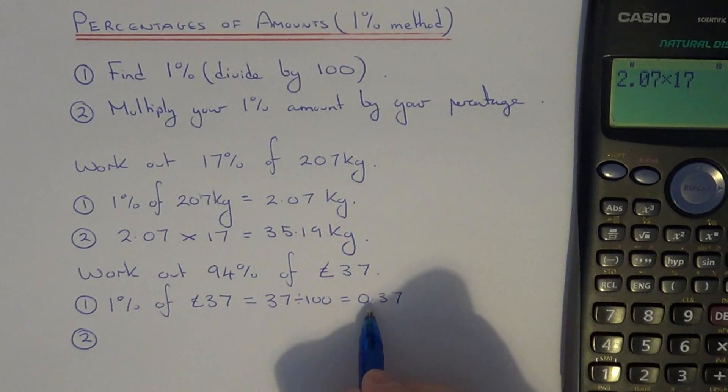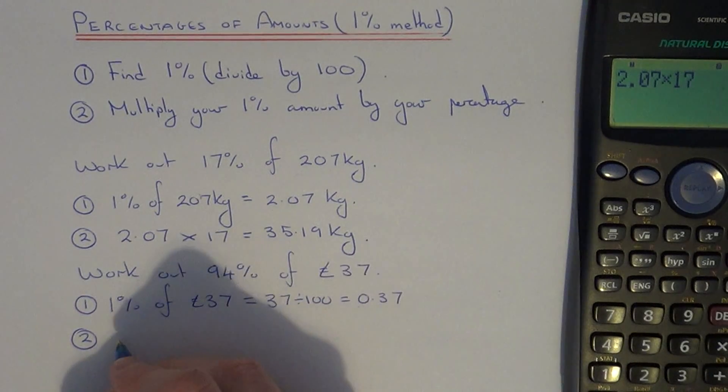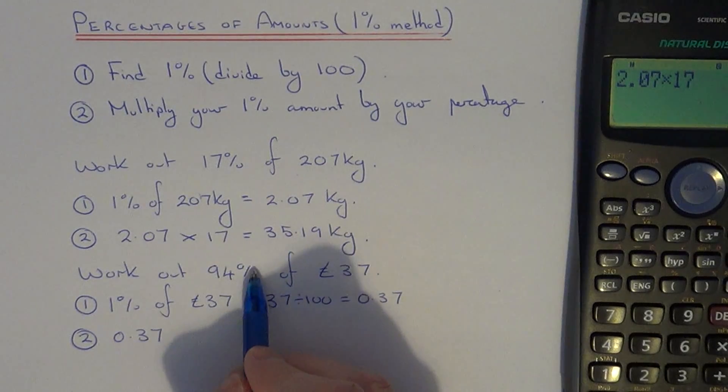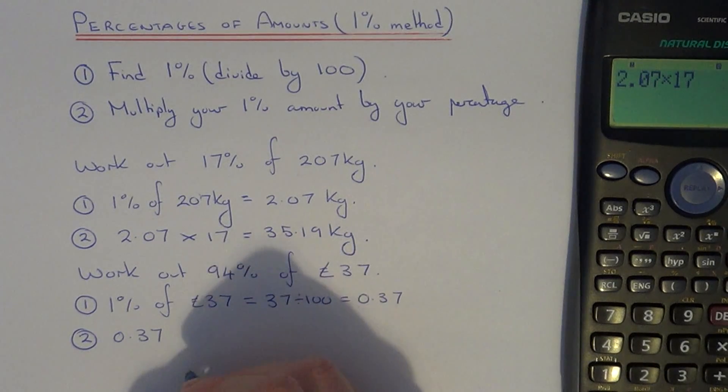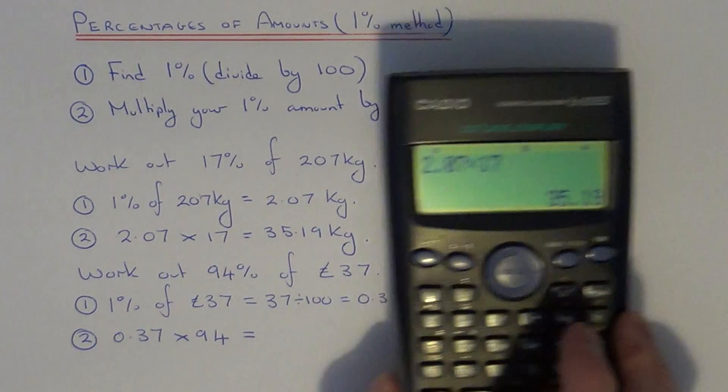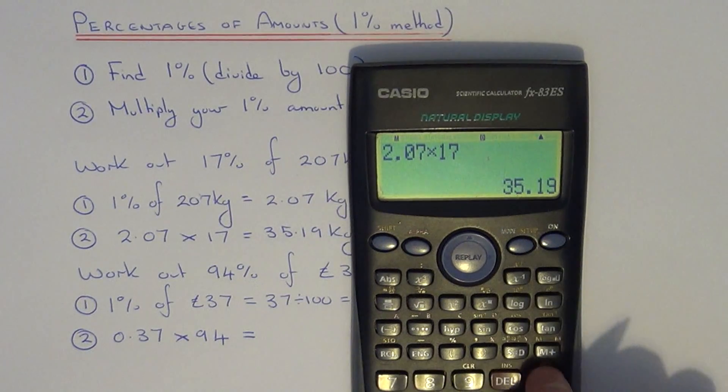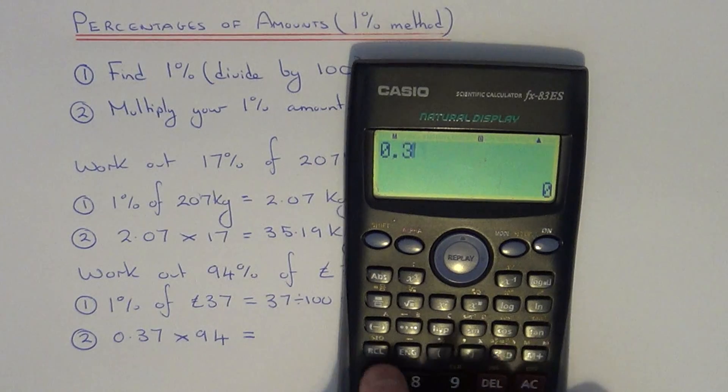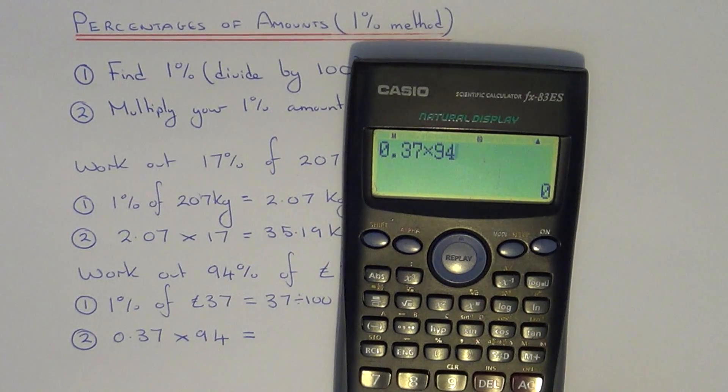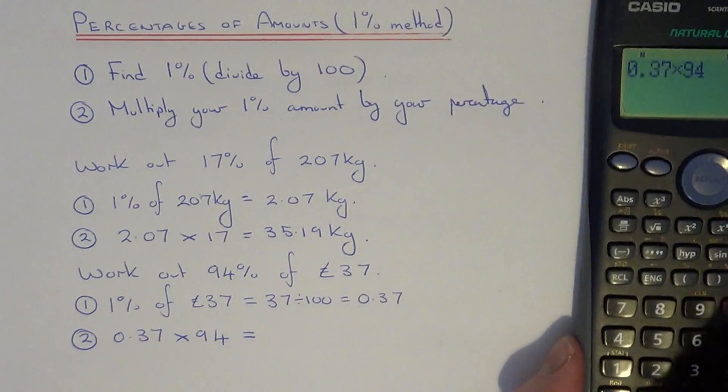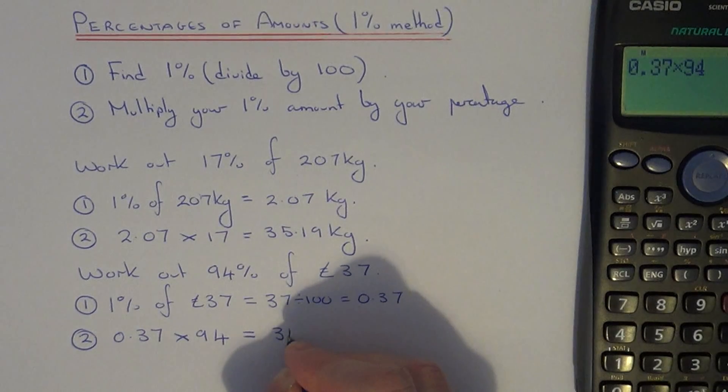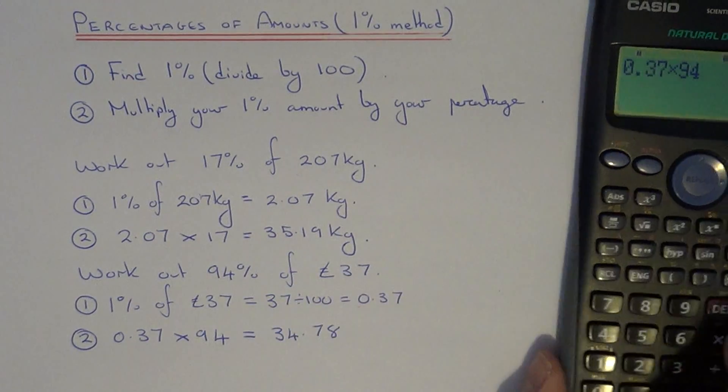Finally, since we have 1%, which is 0.37, all you need to do now is multiply this by the percentage, which is 94. So just type this on your calculator: 0.37 times 94. That's £34.78.